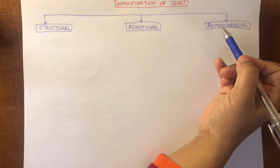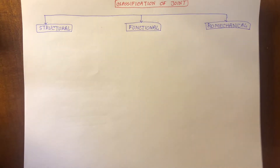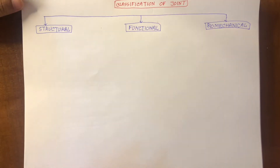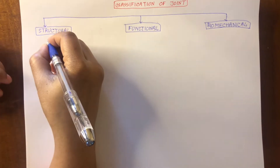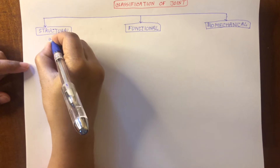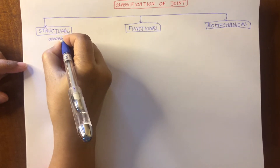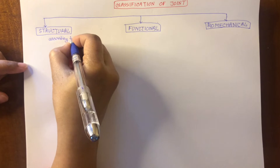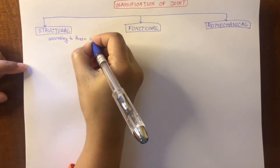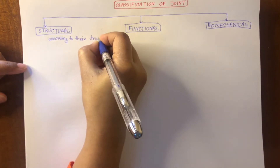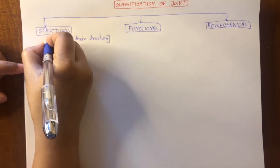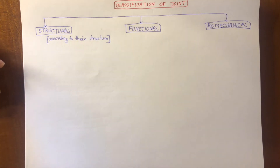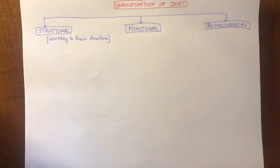and we have biomechanical classification. Now let's see structural classification. Structural classification is according to their structure, and according to their structure we have three types of joints.